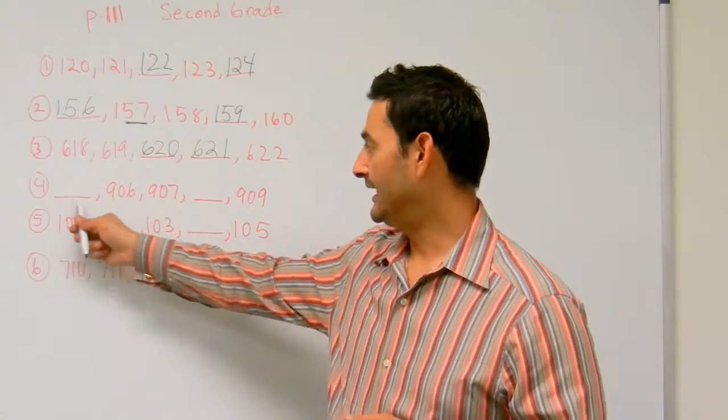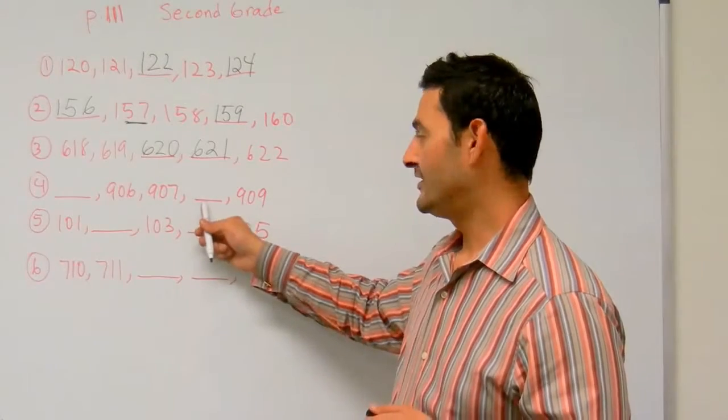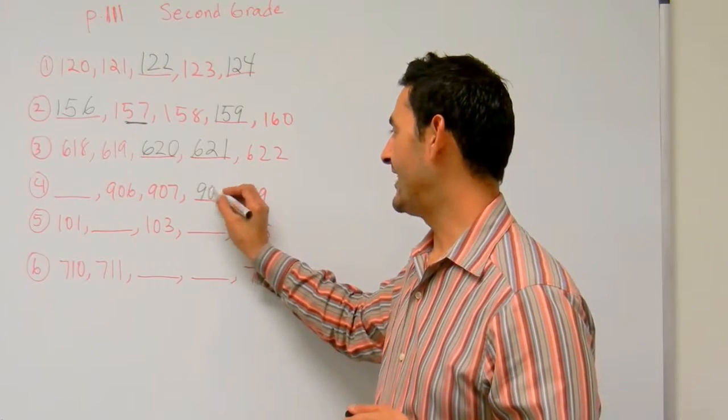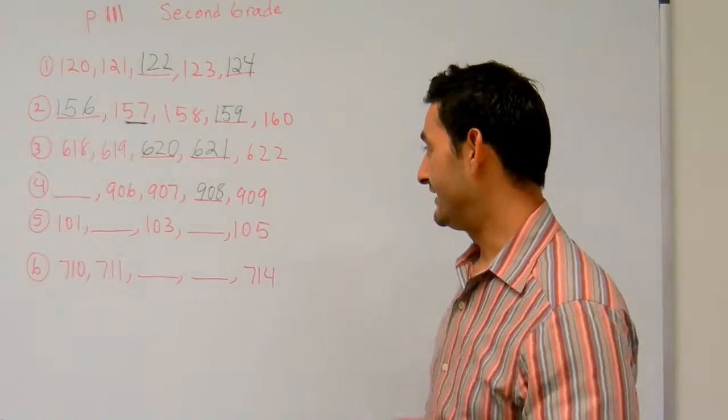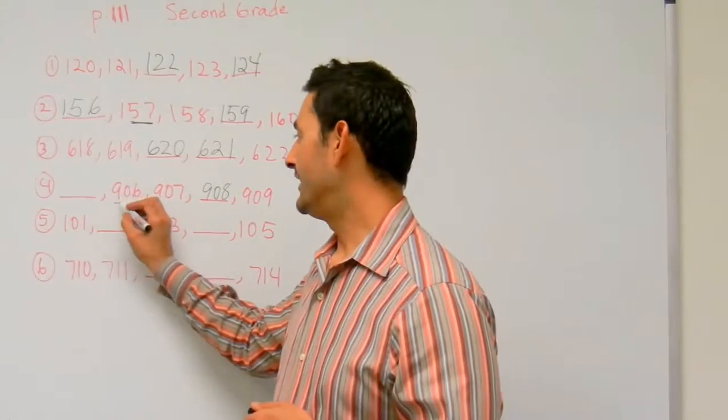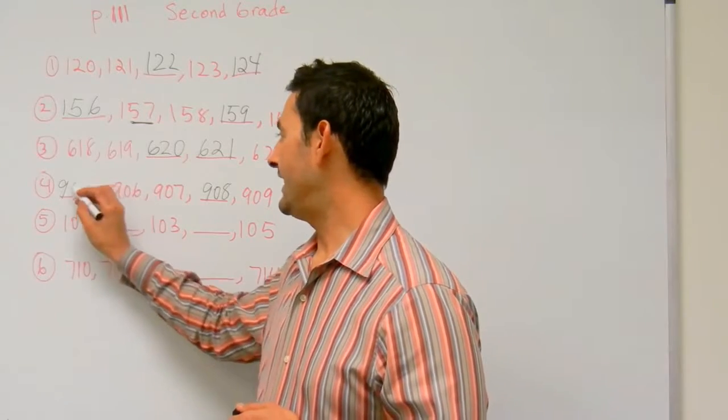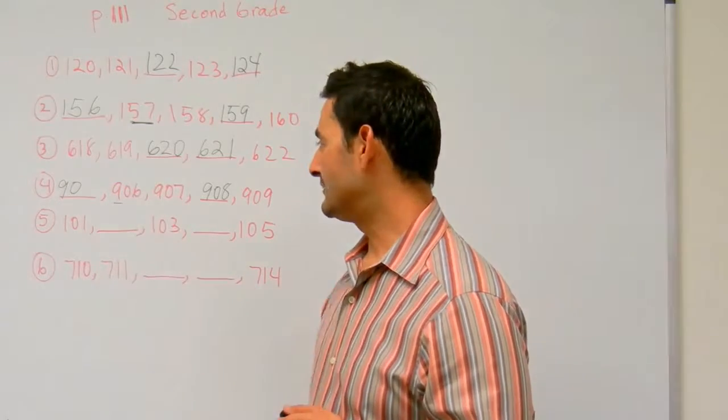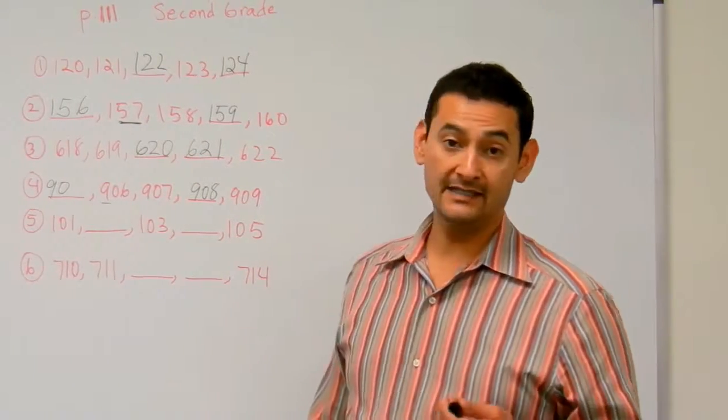So here we have blank, 906, 907. You know that 908 goes there. 909. What goes there? Well, let's use our knowledge of place value. In the 100s place I have a 9. In the 10s place I have a 0. And in the 1s place I have a 6. So let's count backwards. 6, 5.